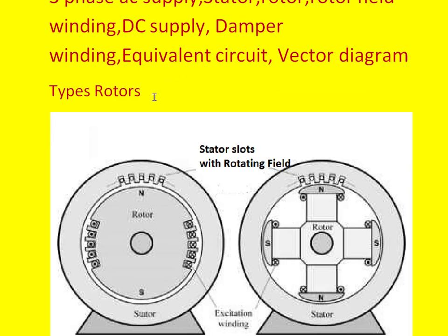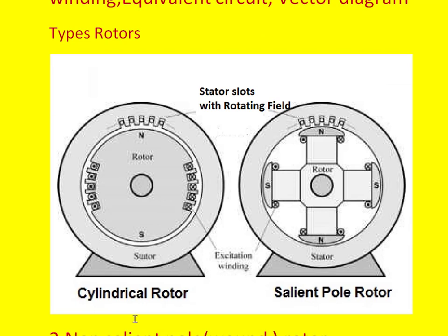In synchronous machines or synchronous generators there are two types of rotors. One is called the cylindrical rotor, which is also called the wound rotor. The other one is called the salient pole rotor. This cylindrical rotor is also called the non-salient pole rotor.